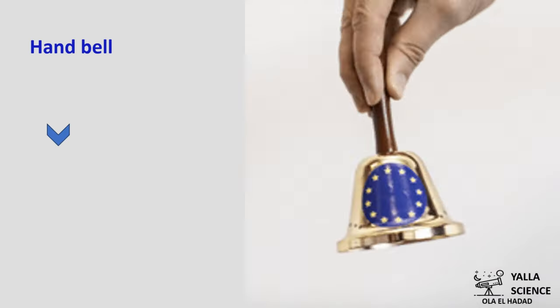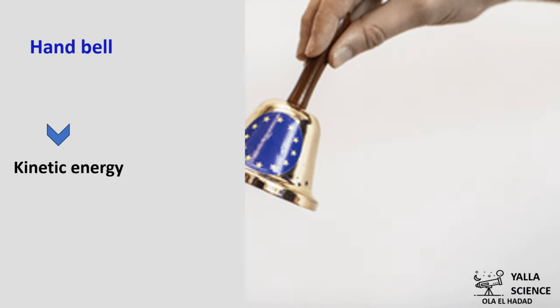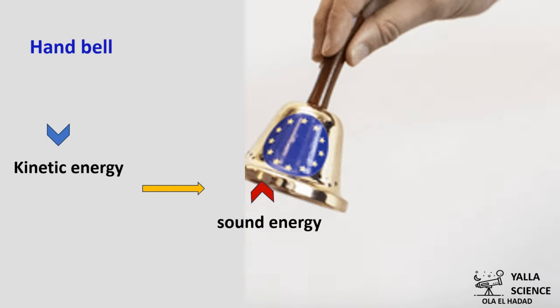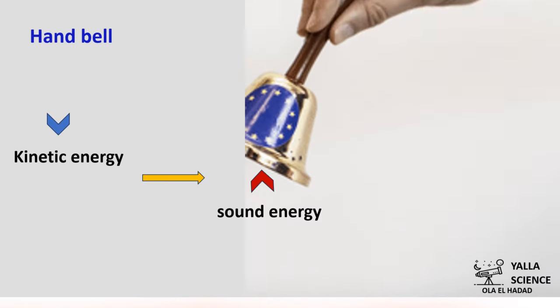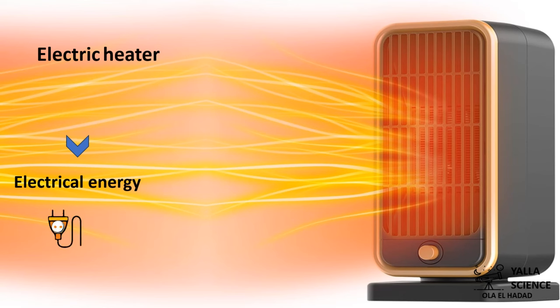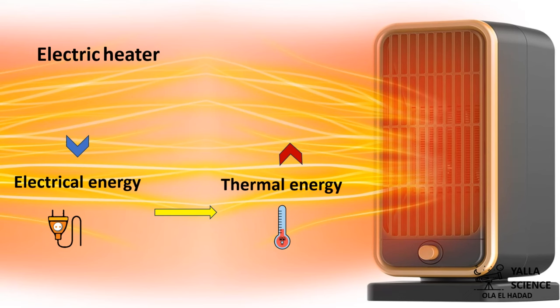The output energy of the clock also includes sound energy. For the electric heater, we use it to warm ourselves in cold weather. What is the input energy of the electric heater? Electrical energy. And what is the output energy that comes out of the electric heater? Thermal energy.